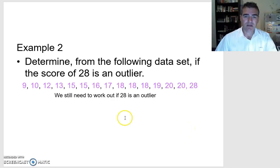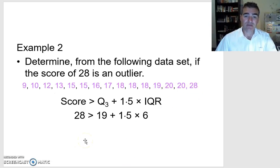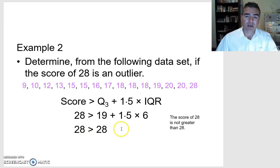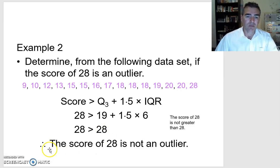We still haven't found out whether 28 is an outlier from that data set. Because it's a high score, we use the formula where the score has to be bigger than the upper quartile plus 1.5 times the interquartile range. Our score is 28, our upper quartile was 19, and 1.5 times our interquartile range of 6 gives us 9, so the result is 28. But for it to be an outlier the score has to be strictly bigger than that result — and it's not, it's the same. So 28 is not an outlier.